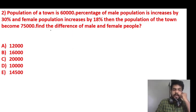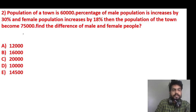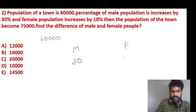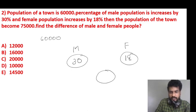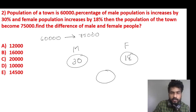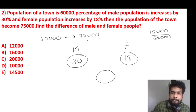Next question. Population of a town is 60,000. Male population increases by 30 percentage and female by 18 percentage. The population of the town becomes 75,000. We have 75,000 minus 70,000 difference.